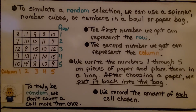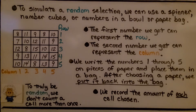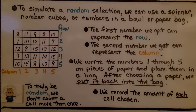To simulate a random selection, we can use a spinner with numbers 1 through 5, number cubes, or numbers in a bowl or paper bag. The first number we pick can represent the row, and the second number we pick can represent the column. Since I didn't have a spinner or number cubes handy, I decided to write numbers 1 through 5 on pieces of paper and place them in a bag.